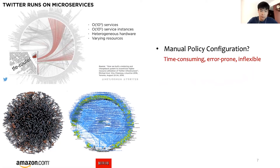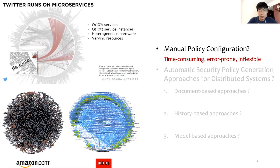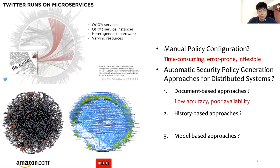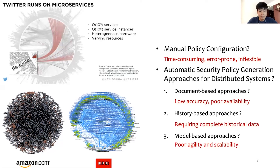To automatically generate security policies for distributed systems, existing efforts can be divided into three categories: document-based approaches, history-based approaches, and model-based approaches. However, their drawbacks regarding accuracy, completeness, and agility make them unsuitable for microservices.